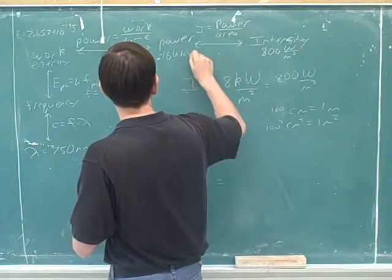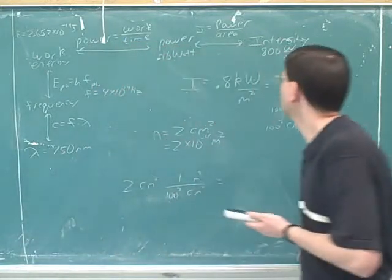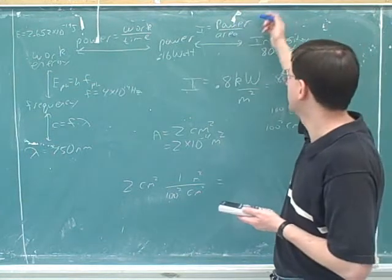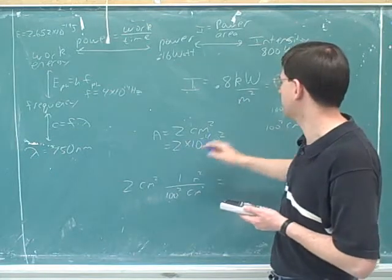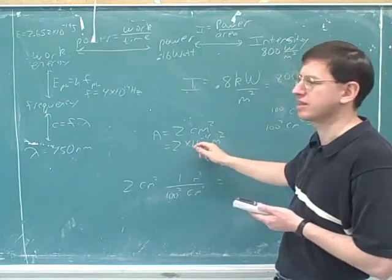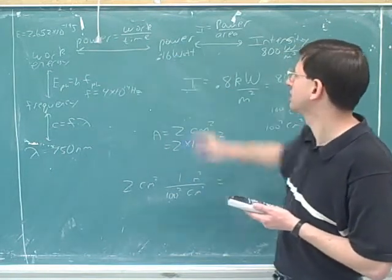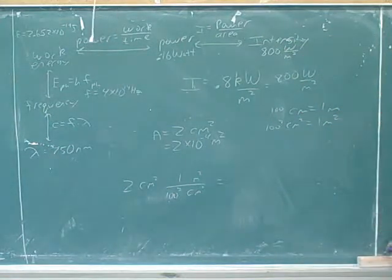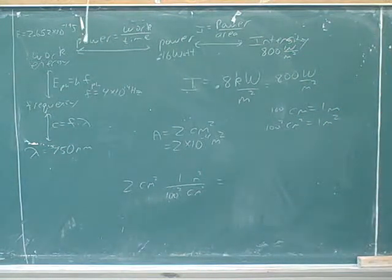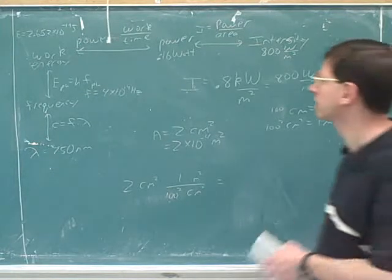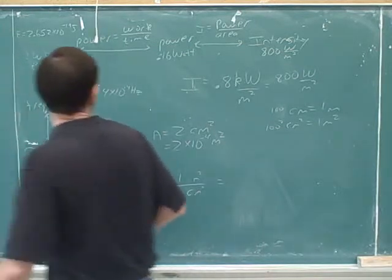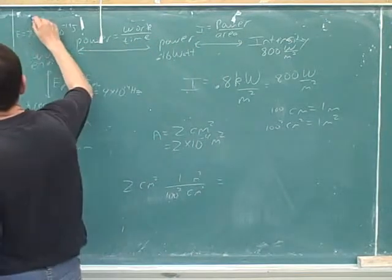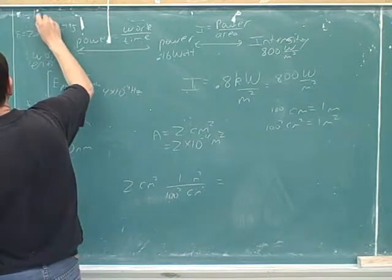And then they want it for... So now you just use this equation here. Power is area times intensity. And we figured out the intensity was 800 in standard units and the area was 2 times 10 to the negative 4. This is the number you got? Yeah. Okay. And then... So they want it for one second. So that's how much energy there is for one second also. So... That's the work. 0.16 joules. And then they want how many photons to each photon.